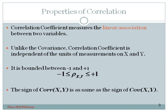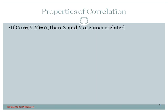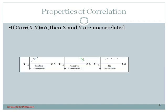If we look at the sign of the correlation coefficient, it will be the same as the sign of the covariance. If the correlation is zero, that means x and y are uncorrelated.